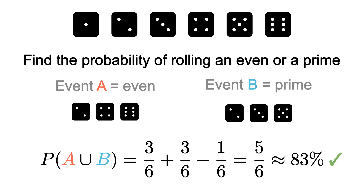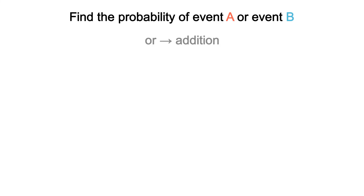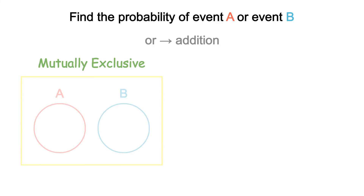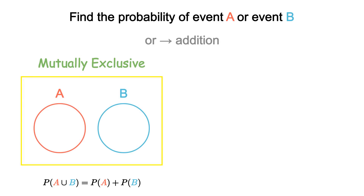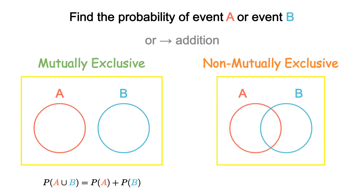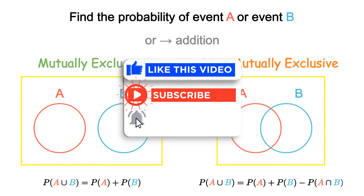As a quick recap: in the context of probability, whenever we see the keyword 'or,' this indicates we'll be using our addition rules of probability. There are two formulas depending on the types of events. If we're dealing with mutually exclusive events — two separate events that cannot occur at the same time — then P(A or B) = P(A) + P(B). If we're dealing with non-mutually exclusive events — two events that share a common outcome and can possibly occur at the same time — then P(A or B) = P(A) + P(B) − P(A and B).